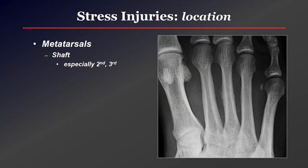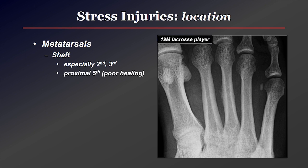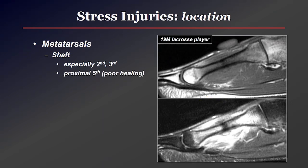The metatarsals are a very common location for stress fractures, especially the second and third. Note that the proximal fifth metatarsal, if fractured, is high risk because these tend not to heal very well, and occasionally surgeons will put a cannulated screw across it to help healing and prevent a more displaced fracture. Here in a 19-year-old lacrosse player, you see the typical periosteal reaction of a stress injury, and MR shows marrow edema, soft tissue edema, and a transverse low-signal developing fracture line.